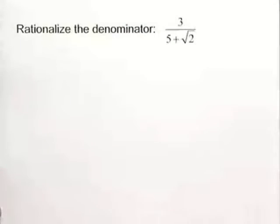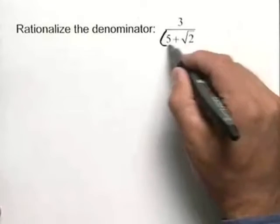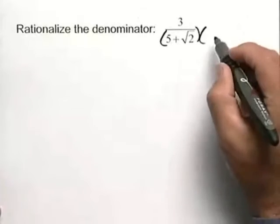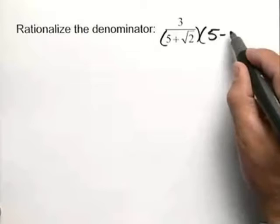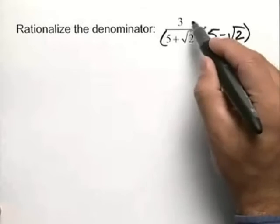Here is an example of rationalizing a denominator. Since we have two terms in our denominator, we're going to multiply top and bottom by the conjugate, which is 5 minus the square root of 2.